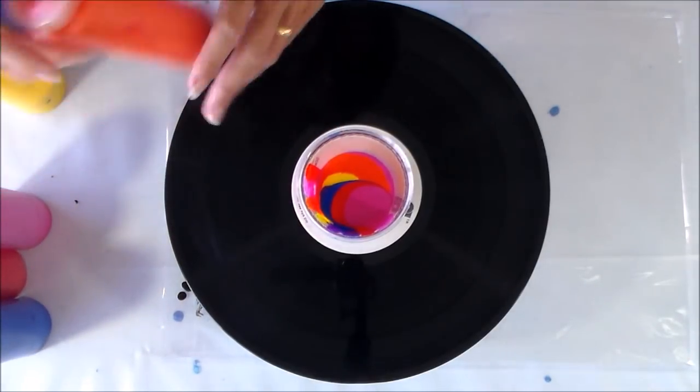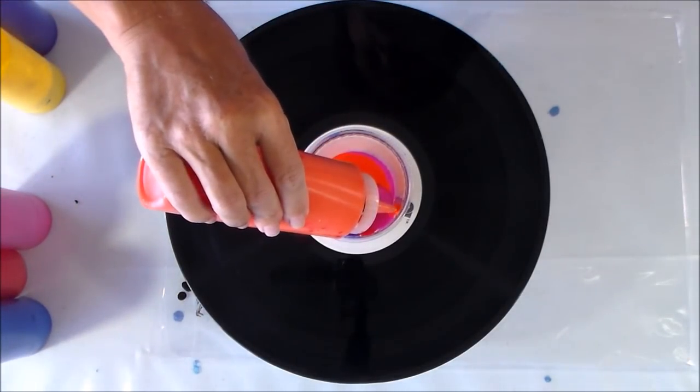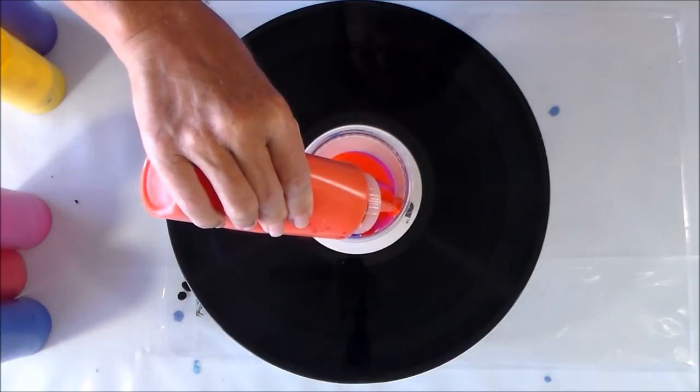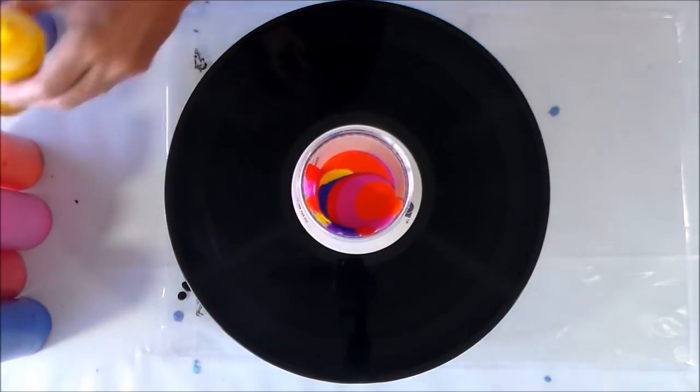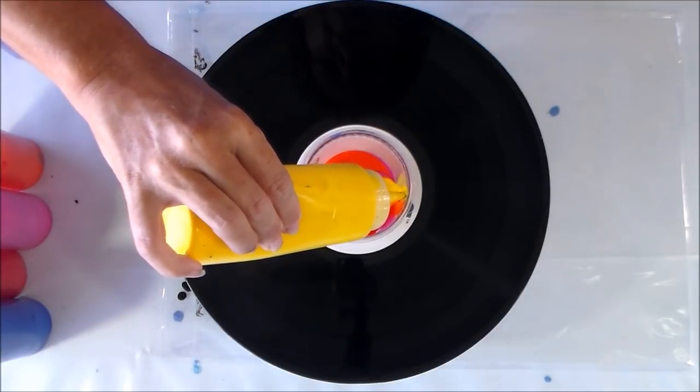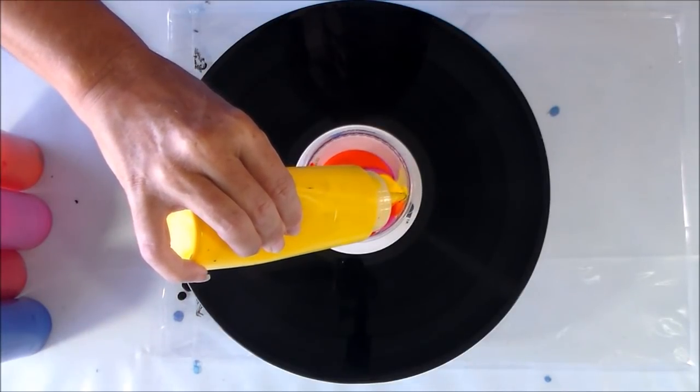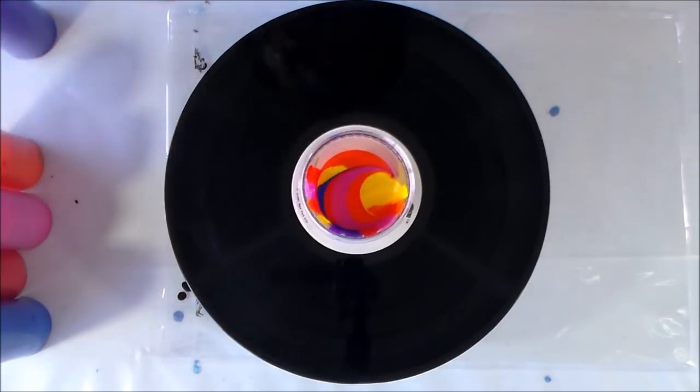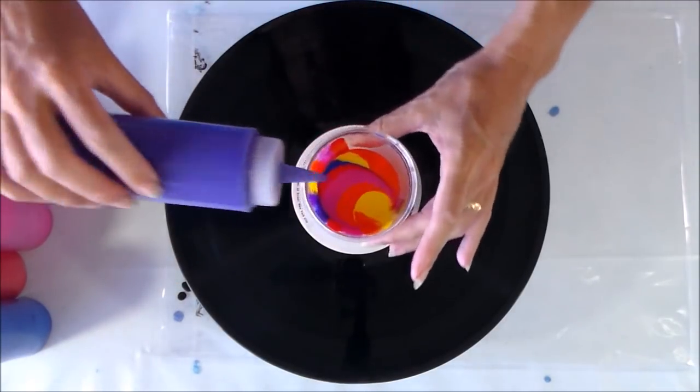In terms of the mix for all of the paints, I've mixed the paints according to my usual mix, which is two parts of paint to one part of Floetrol, and then water as needed to get to that creamy consistency. All of them have got treadmill belt lubricant in them.